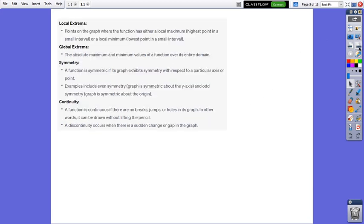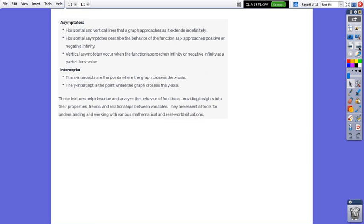Local extrema, global extrema, symmetry and continuity of a function from a given graph. To find the asymptotes, not for all functions, some of them have asymptotes and the intercepts, the x and y intercepts of the function.